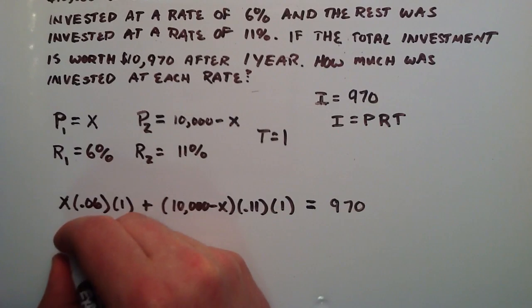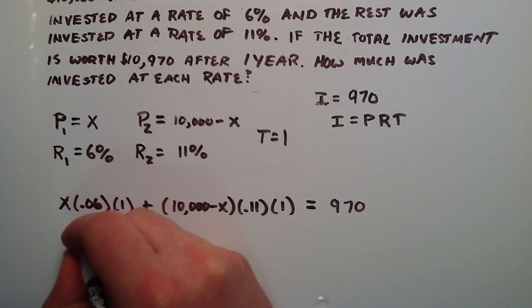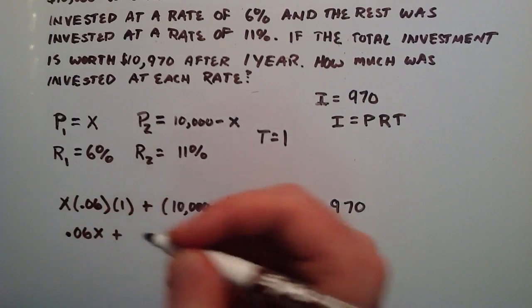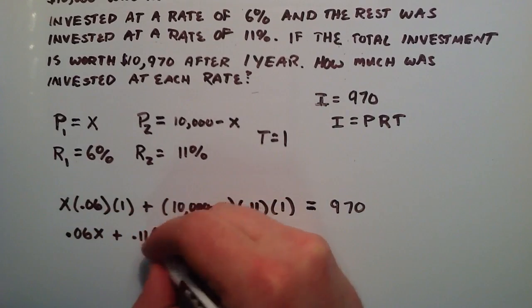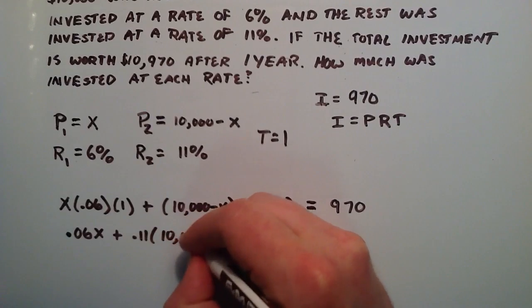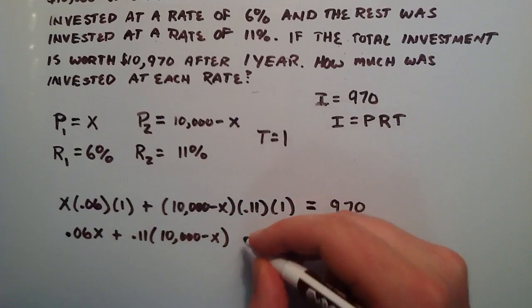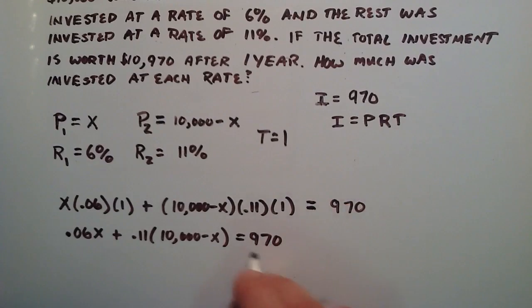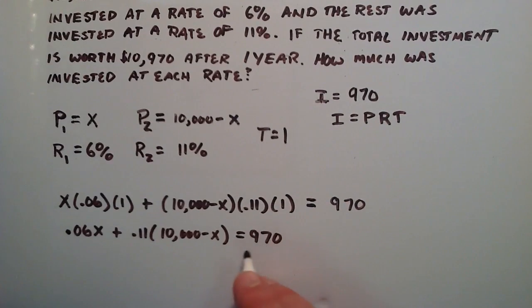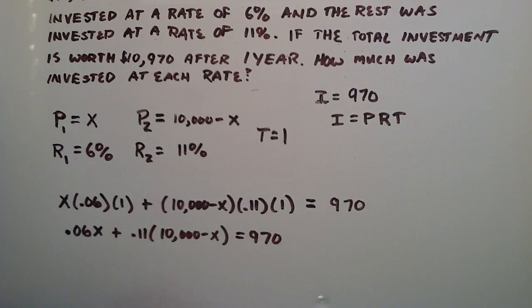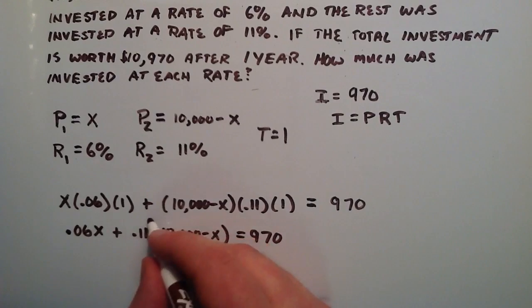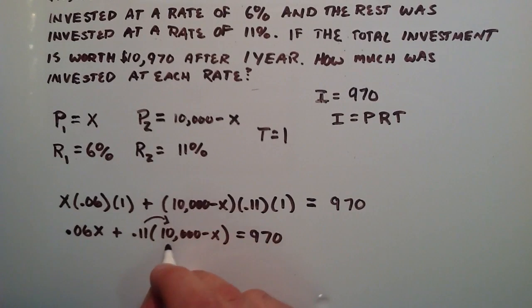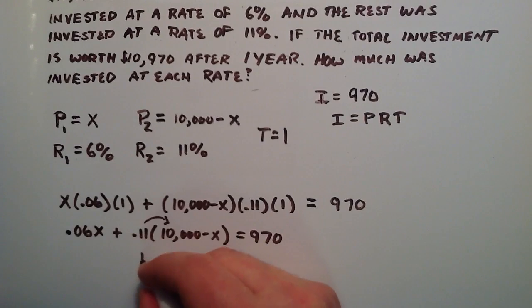So I'm just going to rewrite this a little bit: .06 times X plus .11 times 10,000 minus X. So I just rearranged the terms a little bit to make this look a little cleaner. And that's equal to the total interest at the end, which is $970. So now we're just going to distribute this into the parentheses here. So .11 times 10,000 is going to be 1,100.